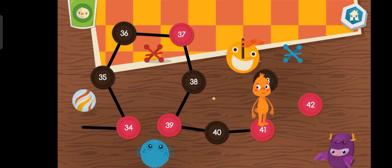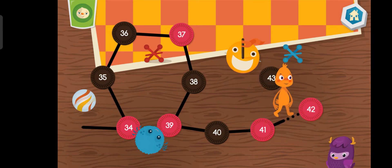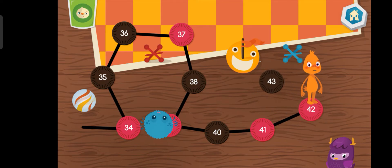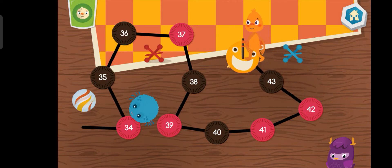What number comes next when counting by ones? 42, 43